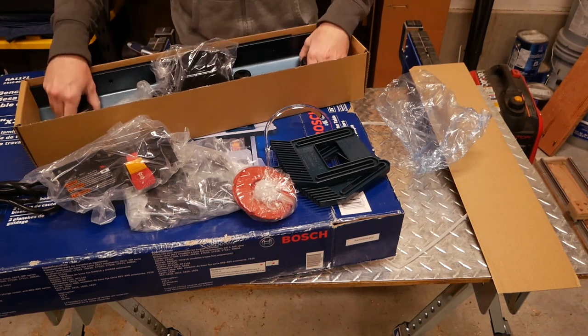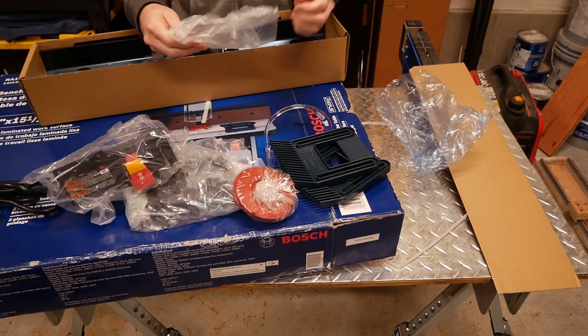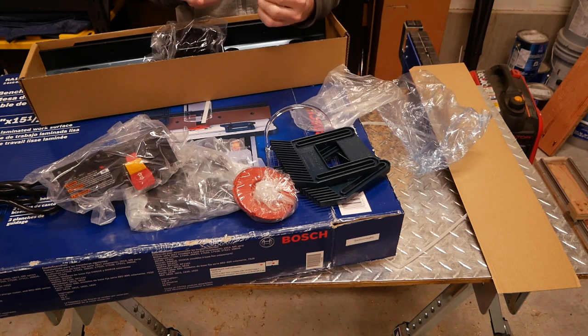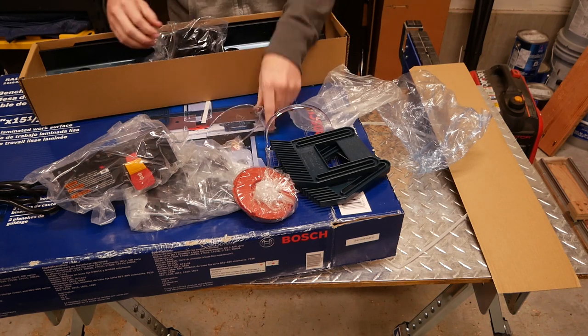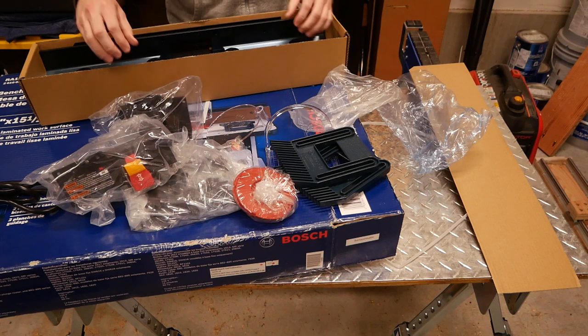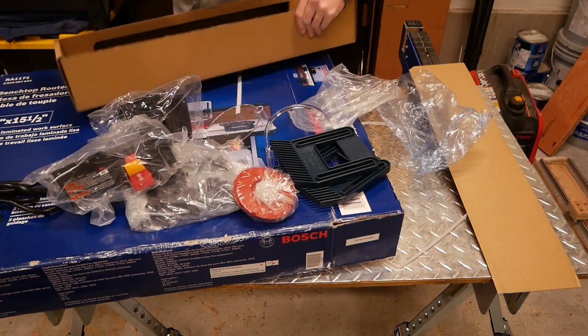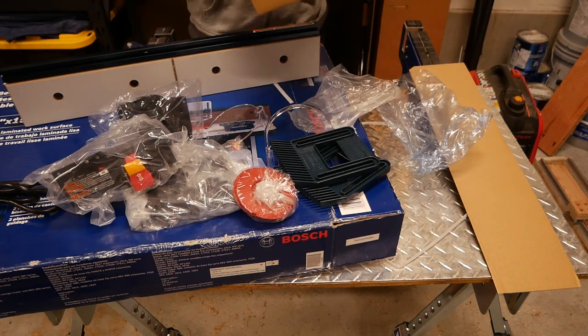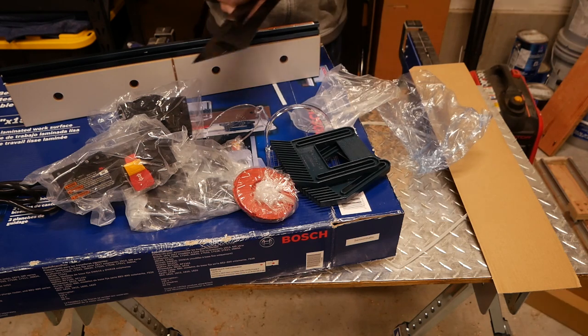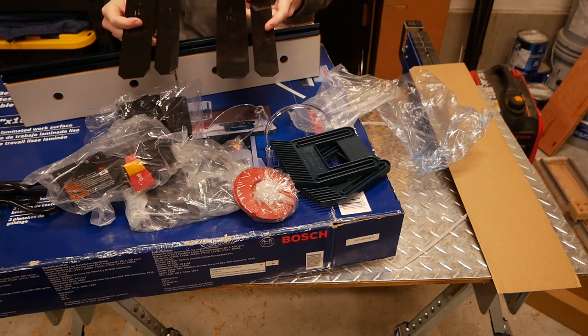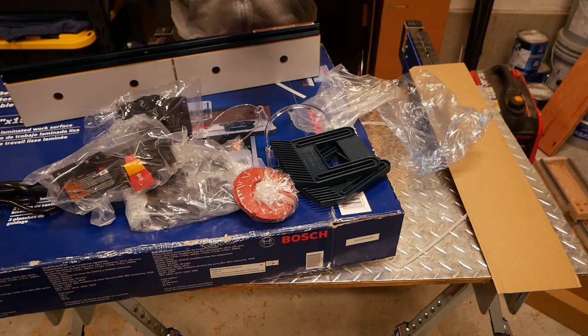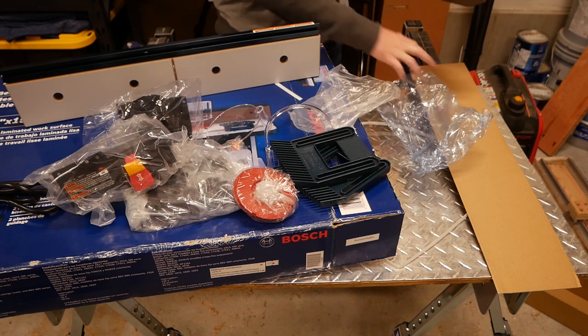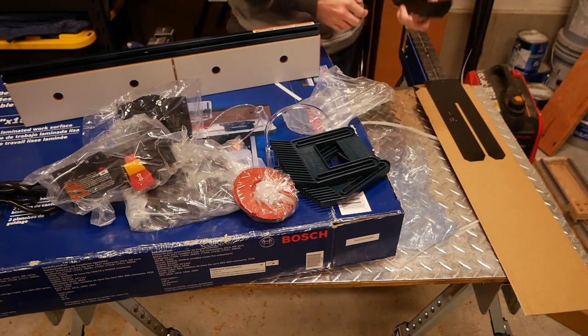Below that is the uber beefy fence assembly. This is nicely made out of a very decent sized chunk of extruded and anodized aluminum. Rounding out the hardware section of this unboxing are a couple of 1/16th inch jointing shims. If you don't know what those are, feel free to skip to the timestamp now flashing on your screen to see them in action.